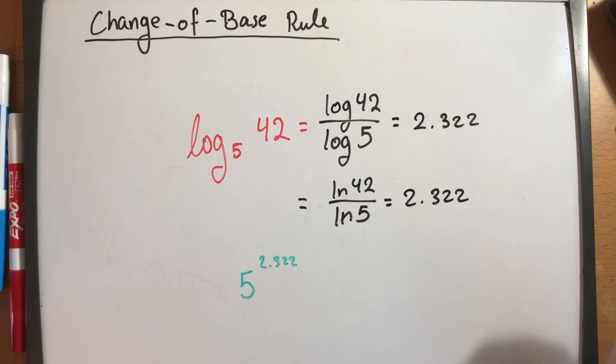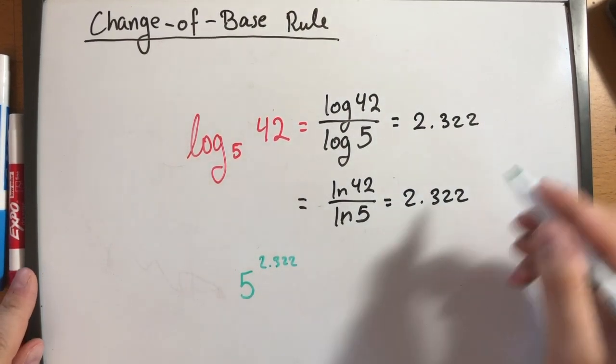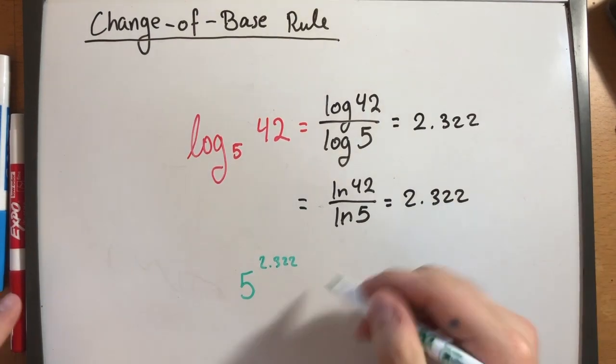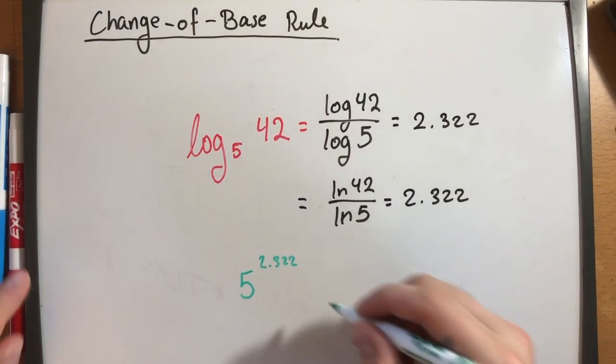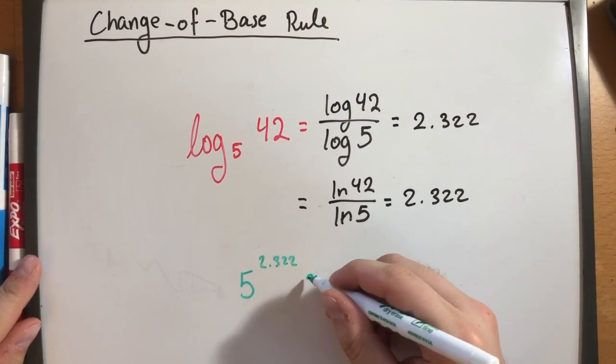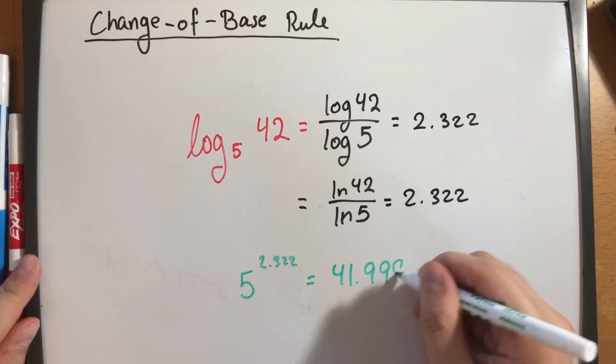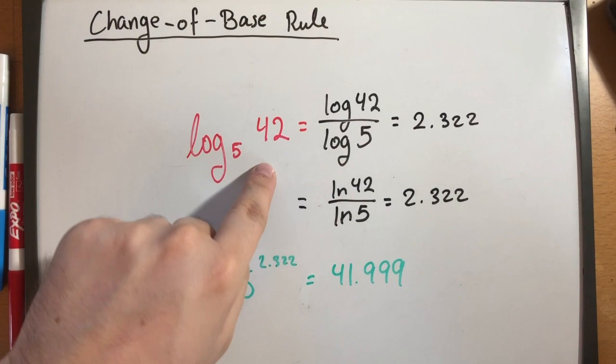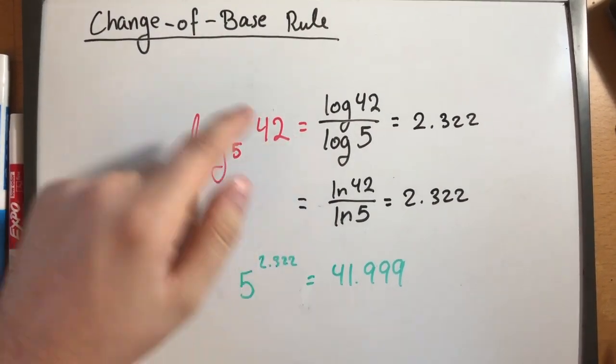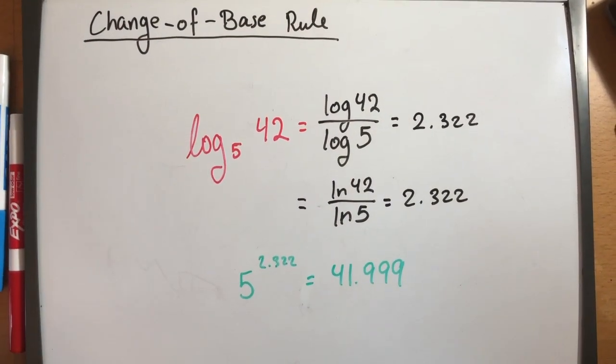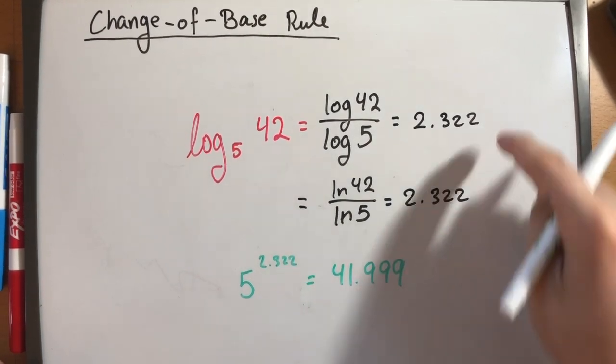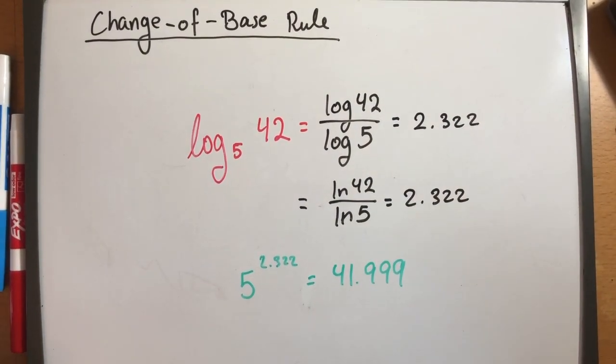So our final answer is technically an approximation. So this here, because the exponent is an approximation, our answer is not going to be exact, but we're going to get 41.999, which is very close to the final answer to the argument. It's almost identical. The only reason it's like this is because we rounded off the answer.